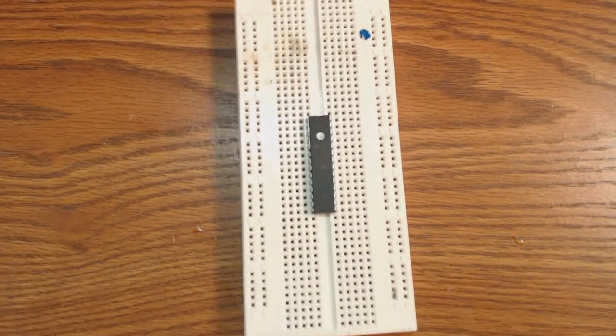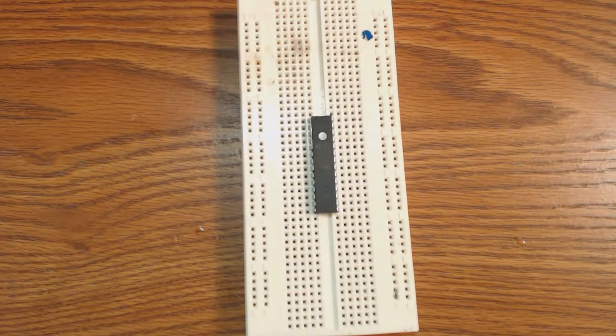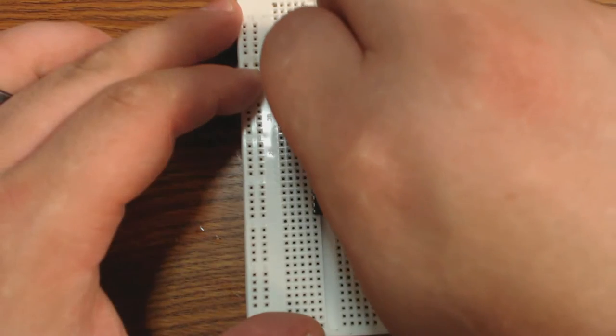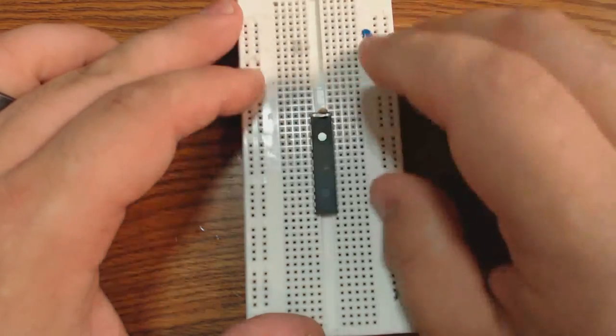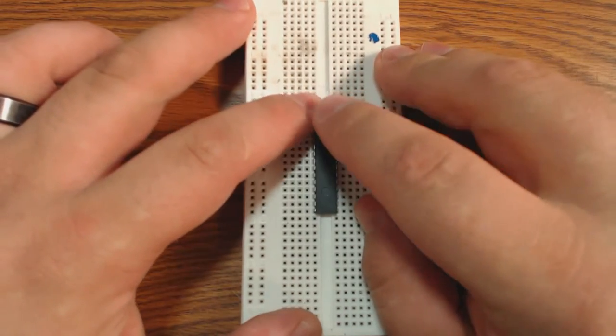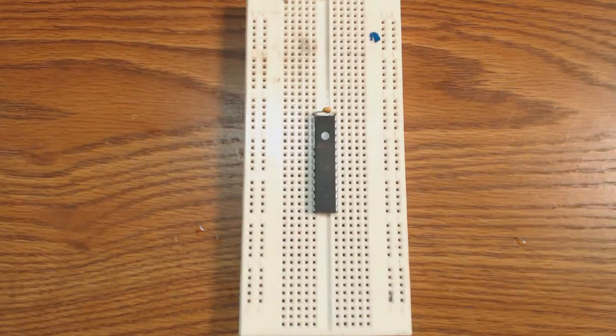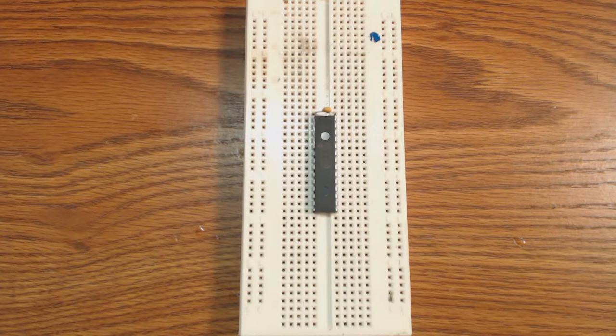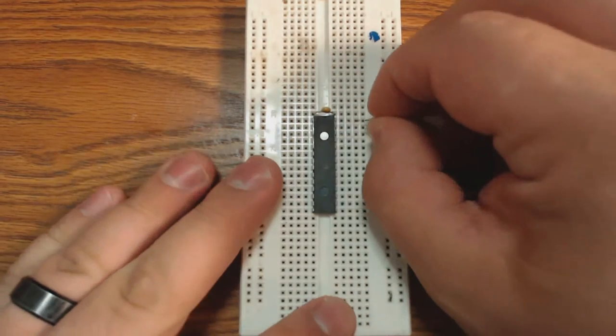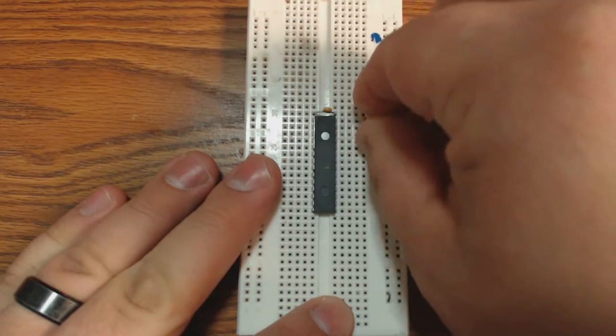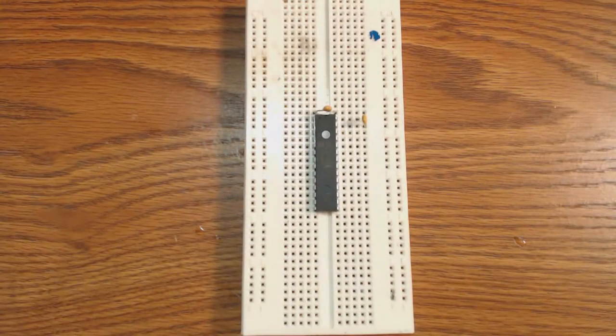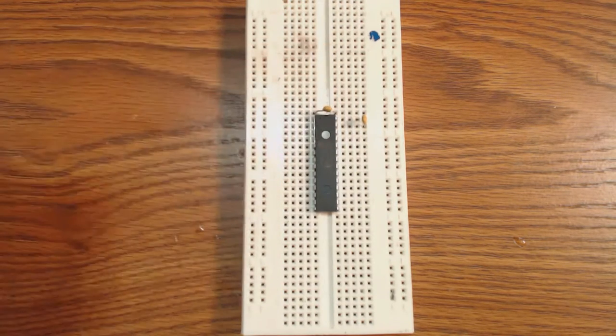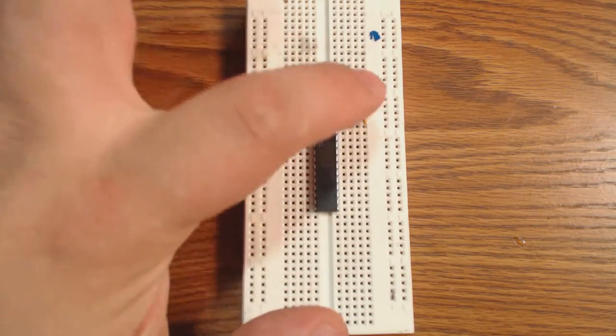Okay so let's get started. First we need a decoupling capacitor and I'm going to go ahead and stick that guy in right there. Sorry for blocking the shot. This is a 0.1 microfarad ceramic like that. And then we actually need another one for the VDD and VSS pins.